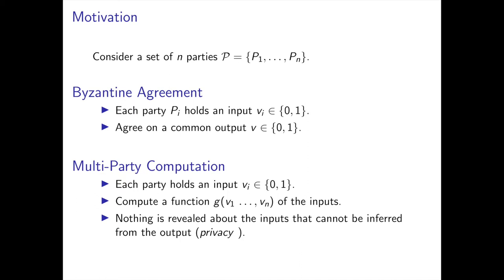In Byzantine Agreement, a set of n parties, each holding an input vi in {0,1}, want to agree on a common output in {0,1}, despite the fact that a fraction of the parties might be corrupted by an adversary and actively misbehaving and deviating from the protocol.